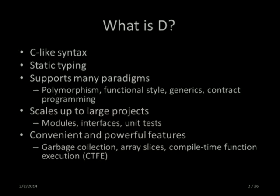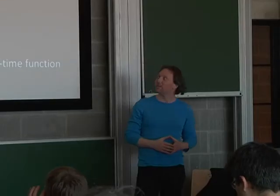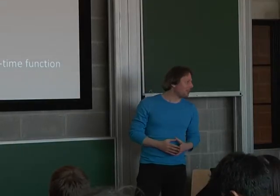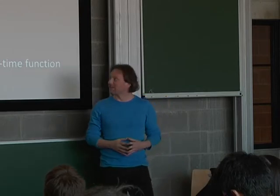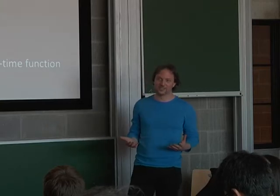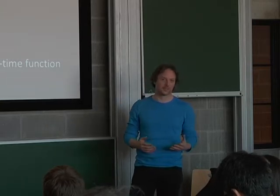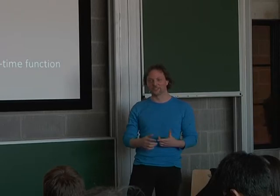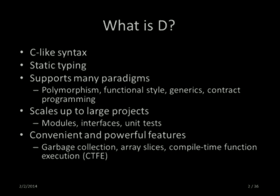D is derived from C in that it has static typing, which basically means that all types are checked at compile time. One of the improvements is that D supports several paradigms. You can program in D like in C — you have functions, and these functions work on data. You can also have objects and classes and do object-oriented programming.